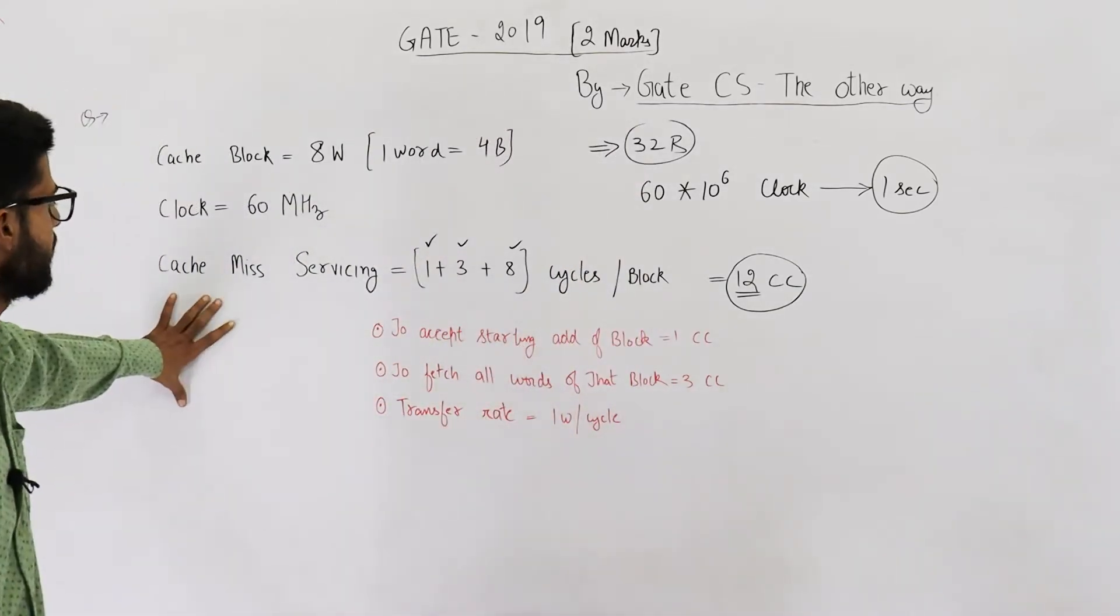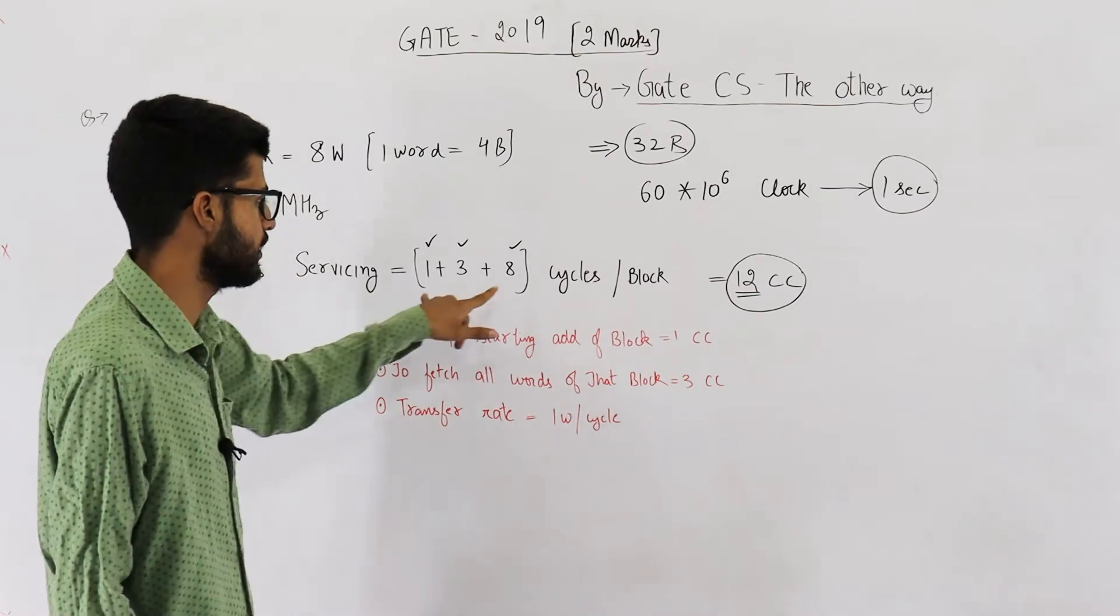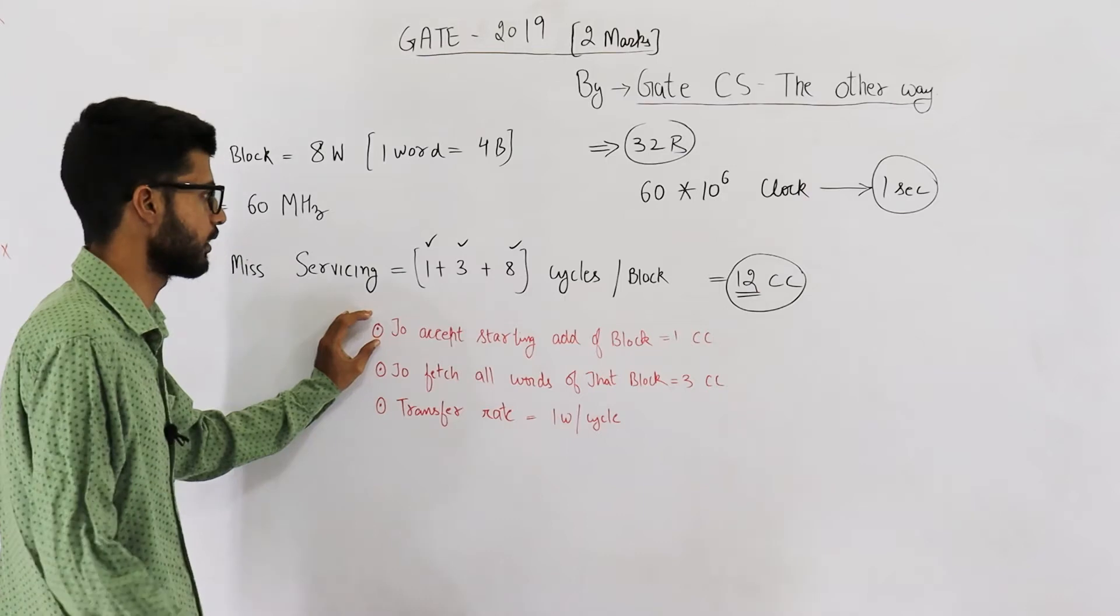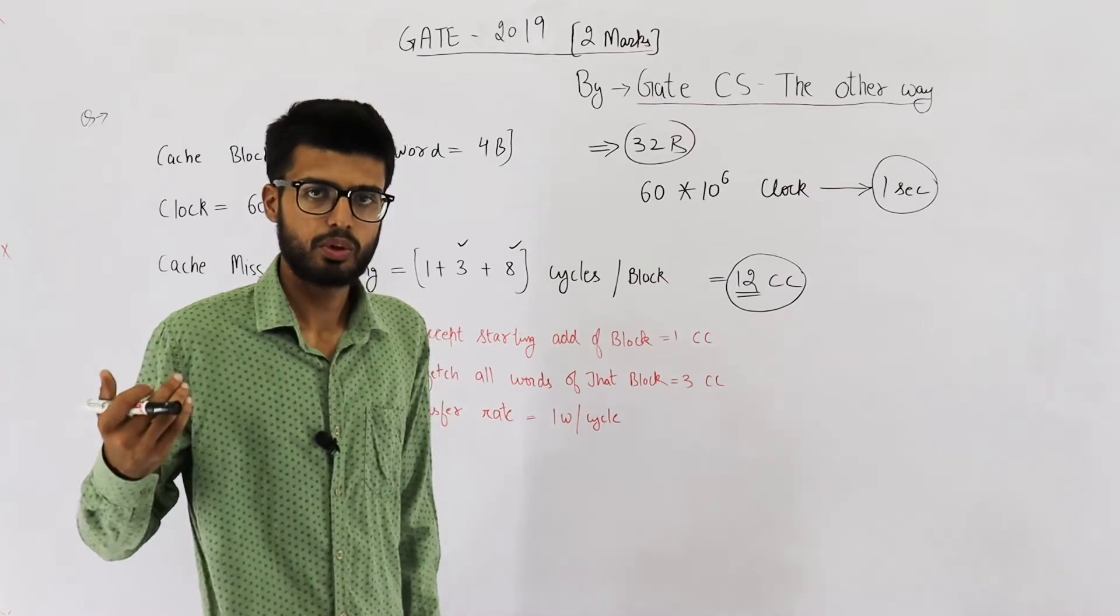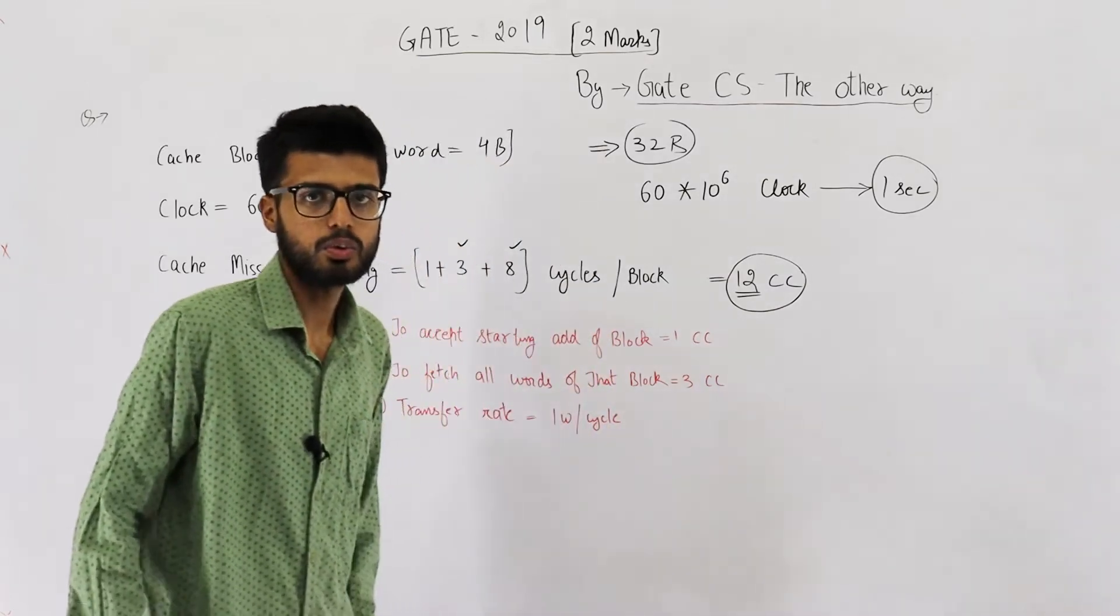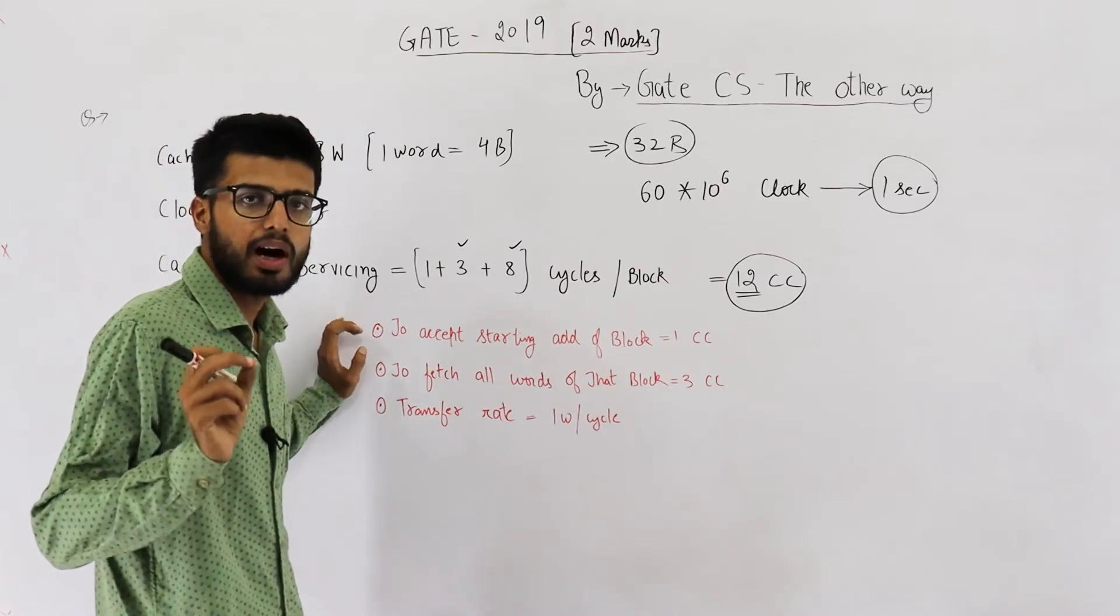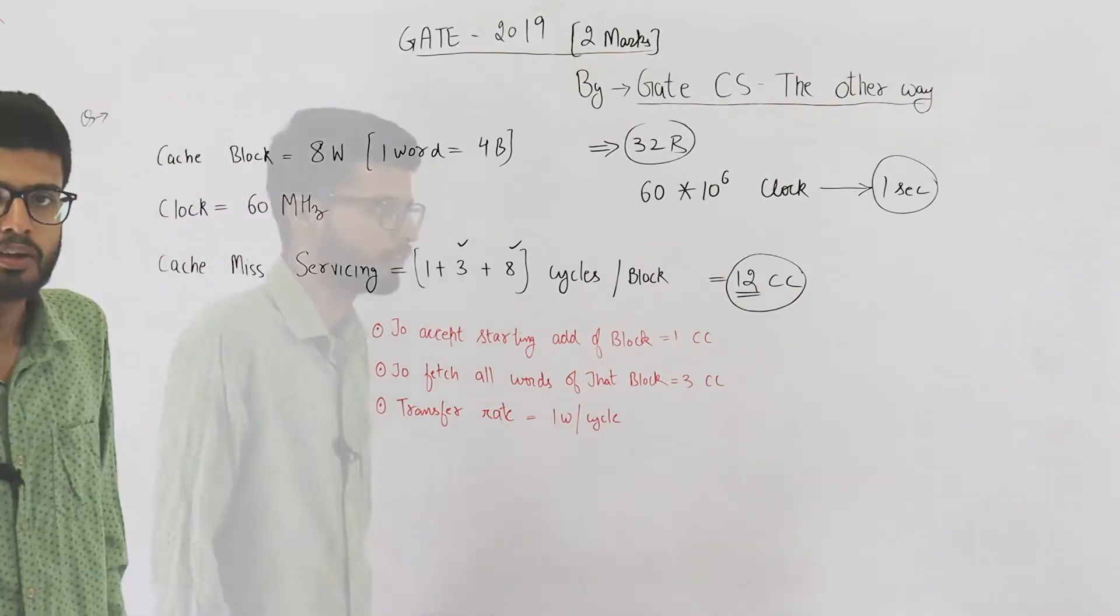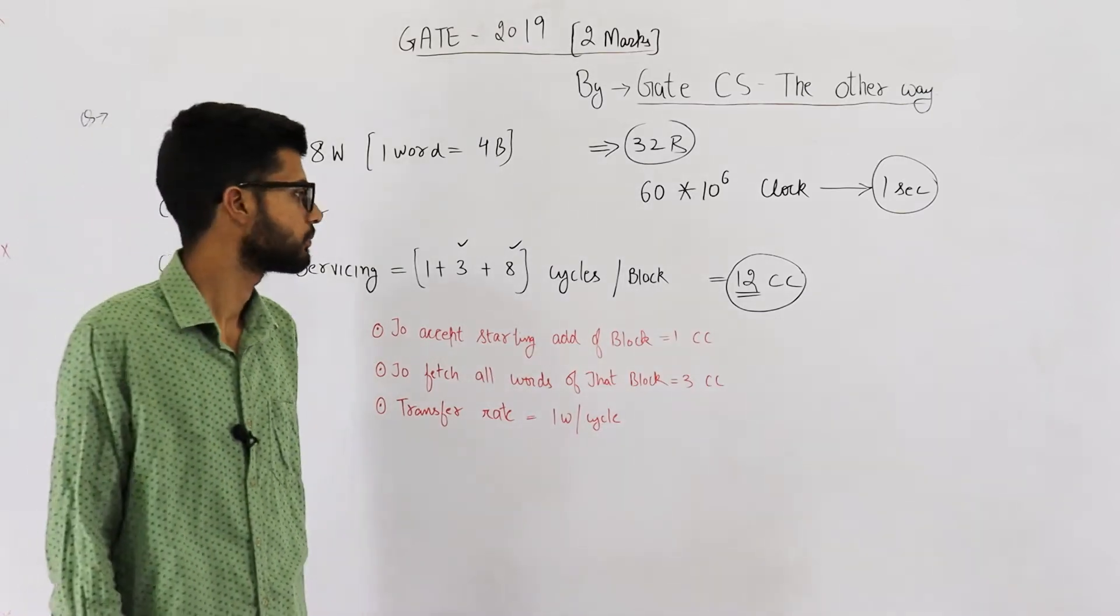The data mentioned in question is this. They are saying to service a cache miss, these many clock cycles are required. First clock cycle is required to accept the starting address of block. So, in one clock cycle, starting address of the required block is transferred to the main memory. Actually, CPU asks for one word. But entire block will be just brought into the cache. This is done just to follow the principle of locality of reference.